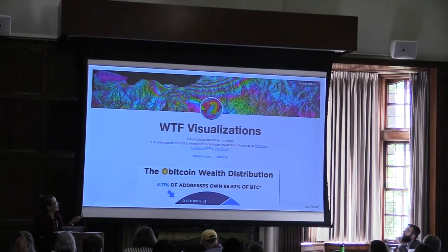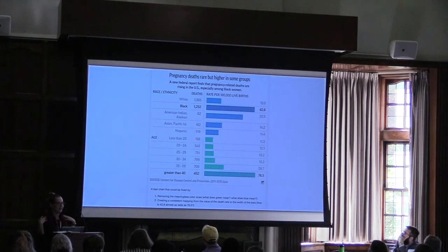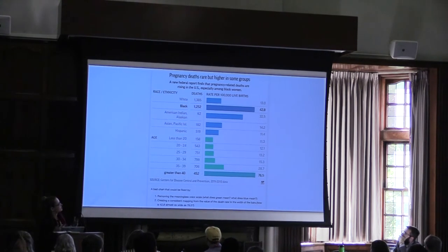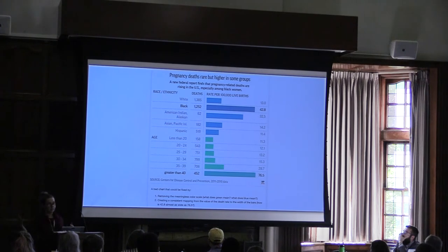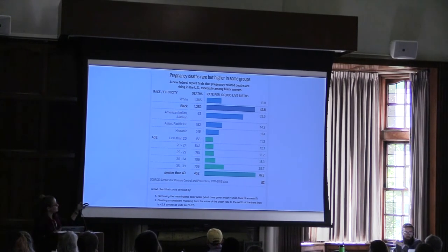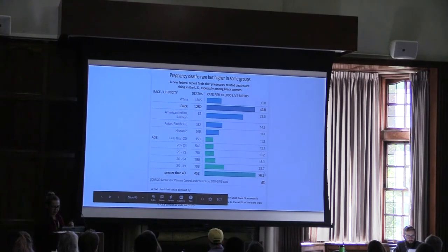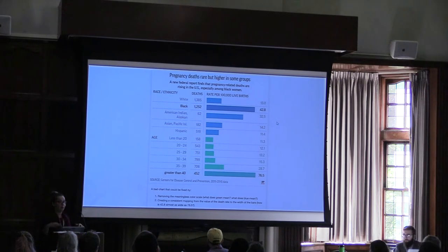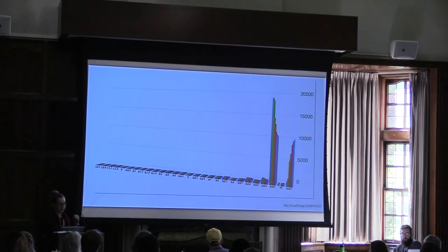There's also a funny Tumblr page called WTF Visualizations that pulls bad visualizations from news stories and TV, and provides recommendations for improvement — like removing a meaningless color scale. One example has a 'greater than 40' section showing 76.5% that almost looks the same as 42.8%, which is a problem. I love showing bad visualizations because you learn a lot more from things that go wrong than things that go right.